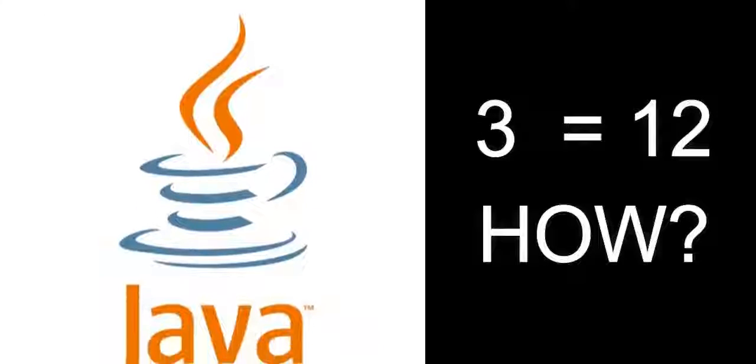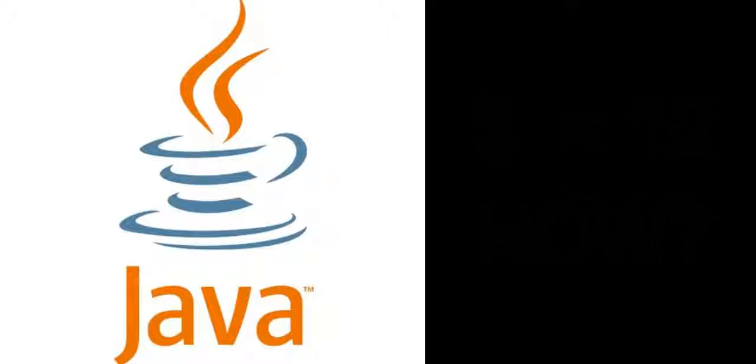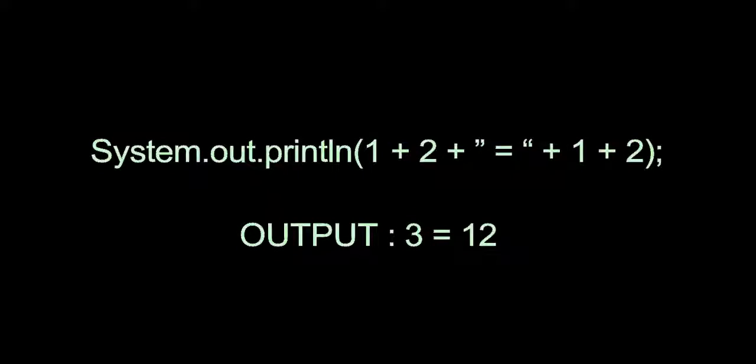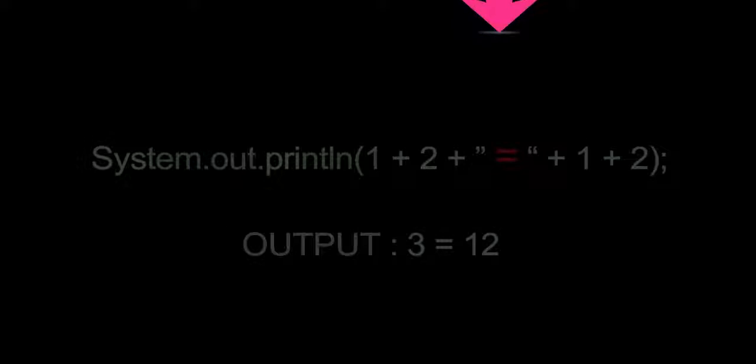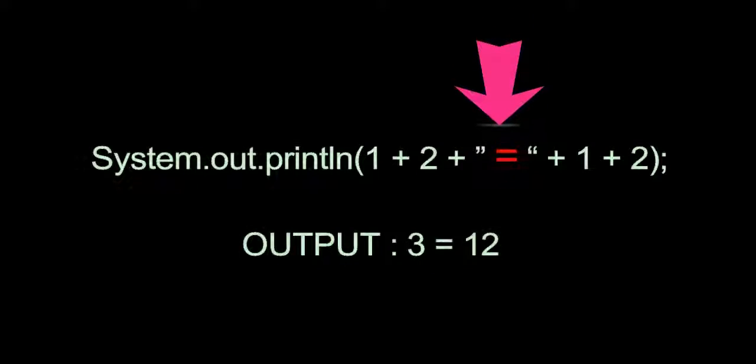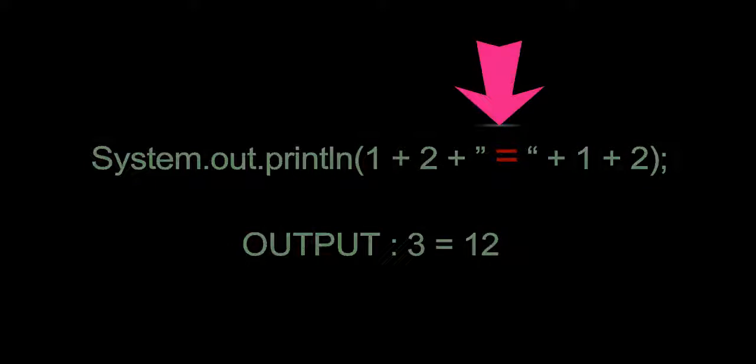In Java 3 can be equal to 12. In Java the output to 1 plus 2 will be 12. A statement like this will result in an unexpected output. But why? Apparently Java starts treating everything as a string once it has encountered a string in system.out statement.